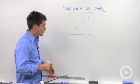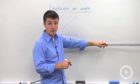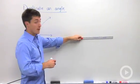Here we have an angle, and I'm going to duplicate it onto a ray. So first I need to draw a ray right over here.